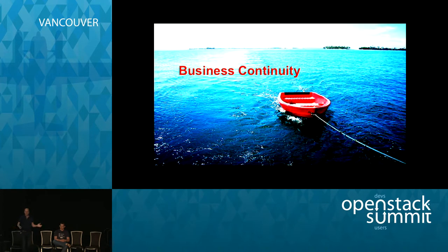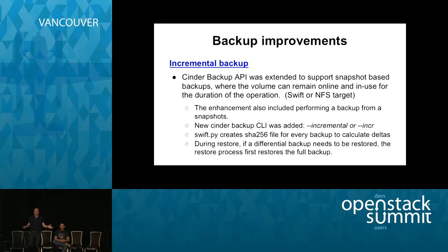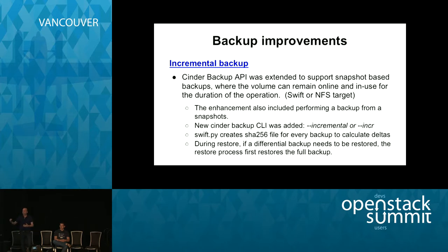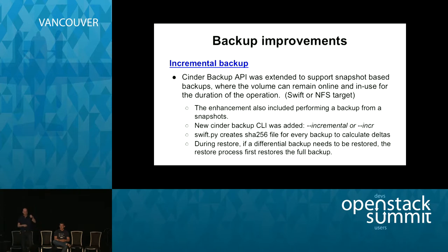Moving on to business continuity — which is a fancy word for backups. In this release, we were able to land incremental backups. The Cinder Backup API was extended to support snapshot-based backups, where the volume can remain online and in use during the operation. The target can be either Swift or NFS. Enhancements also include performing a backup from snapshot, which is a better practice than backing up from the original volume due to performance cost. A new Cinder CLI was added. During restore, the process first restores a full backup, then incrementals follow.